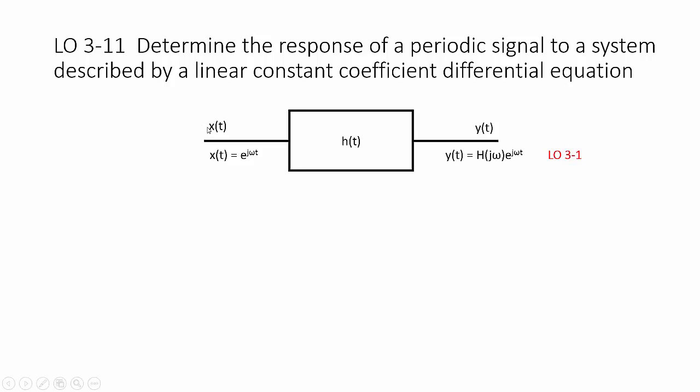Since the beginning of this course, we've been talking about having a system where the input is x of t, our system is described by h of t, and our output is y of t. Starting at the beginning of this chapter with Learning Outcome 3.1, we introduced how if the input was a signal that was a complex exponential, the output would be that same complex exponential scaled by an h, which is a function of the frequency in that complex exponential.